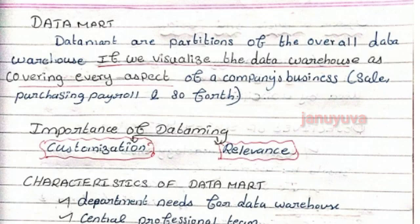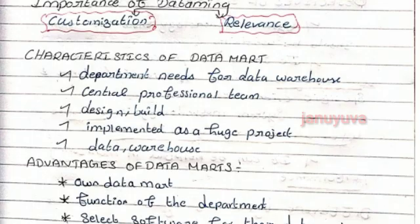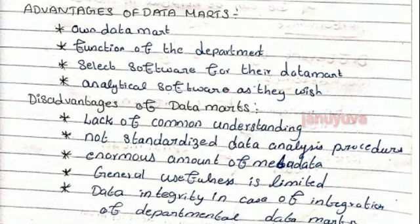Data mart — it is a subset of the data warehouse. Partitions are designed for huge projects to implement. Data mart is useful — advantage is that different functional departments can use their own data and analytical software as they wish. Disadvantages include lack of common understanding across departments, some cannot use metadata, general usefulness is limited, and data integrity issues arise when integrating independent data.